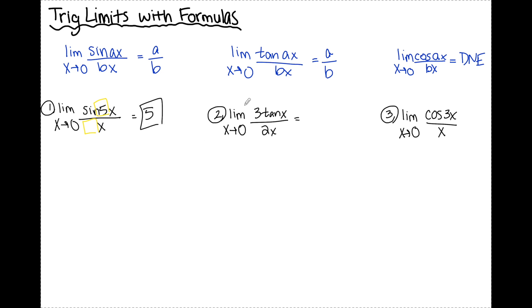For number two, I have the limit as x approaches 0 of 3 tan x over 2x. My a and b values here are 1 for a and 2 for b. But I also have this 3 out in front, so this is going to be equal to 3 times 1 over 2. My final answer here is 3 halves.